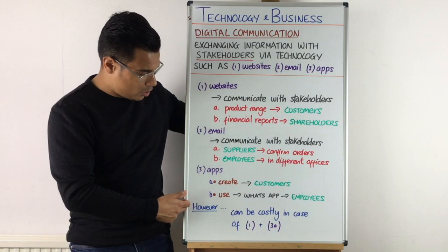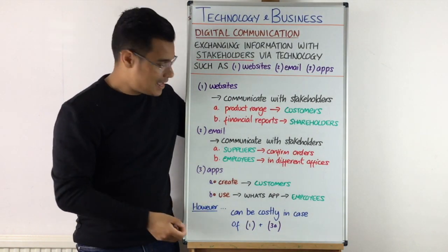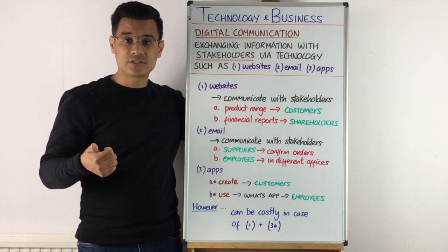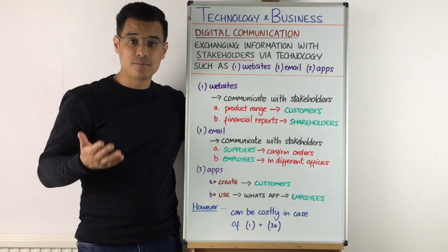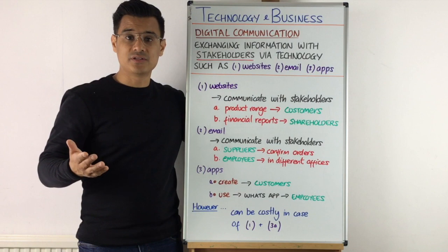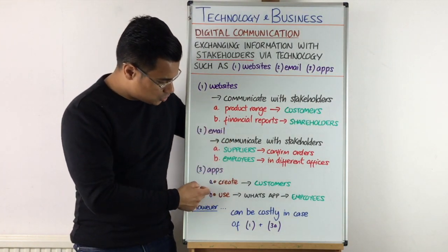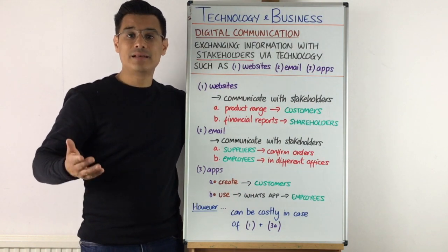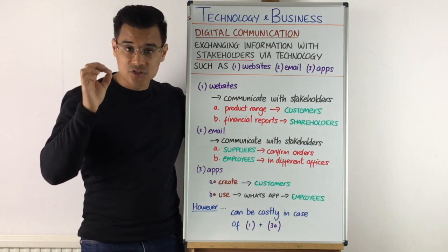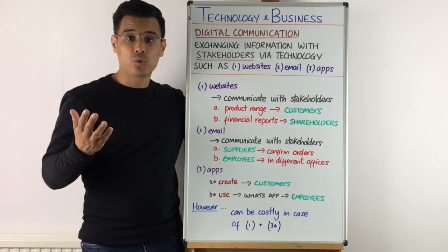Remember that some forms of digital communication can be costly — especially websites, where building and maintaining one can be expensive for the business. Creating an app can similarly be costly. However, some forms are less costly; for example, email and WhatsApp are clearly going to be less costly. You might want to use that distinction to evaluate which type of digital communication to use if you're answering a longer evaluation question.